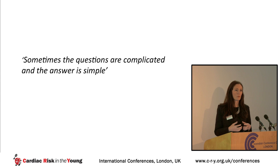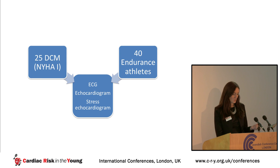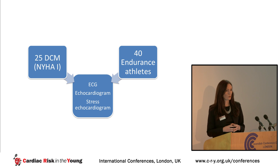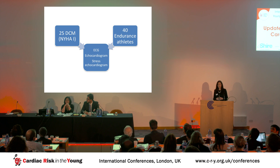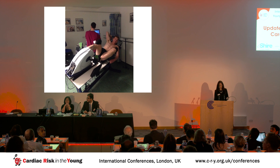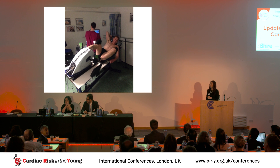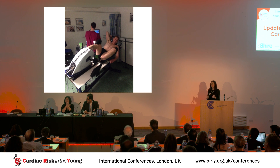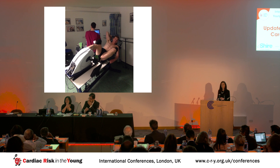Sometimes the question is quite difficult, but actually the answer may be a lot more simple than you think. What we did is look at 25 asymptomatic patients — New York Heart Association Classification 1 — and 40 endurance athletes. We subjected them to ECG, detailed echocardiogram, and stress echocardiogram. We used a tilting cycle ergometer with a 20 watt per minute protocol, and they exercised to maximum capacity. We didn't just look at baseline echo windows — we also looked at global longitudinal strain, diastolic parameters, both at baseline and at peak.